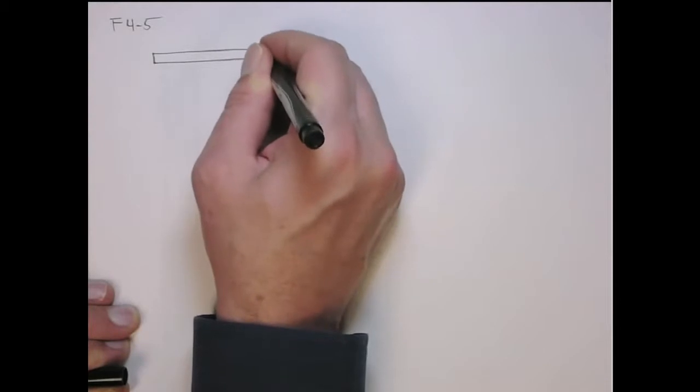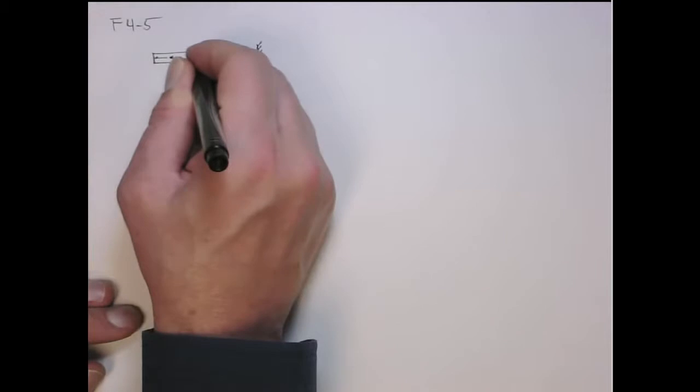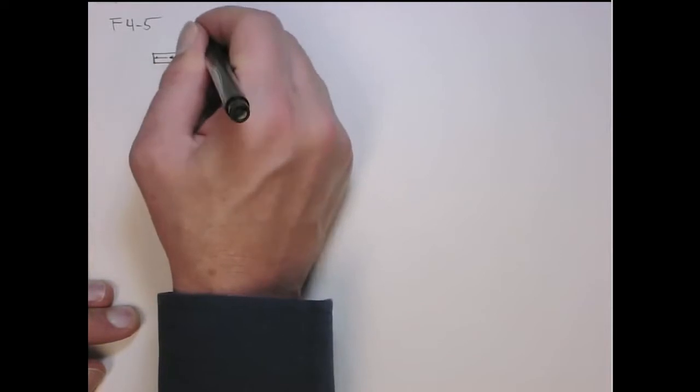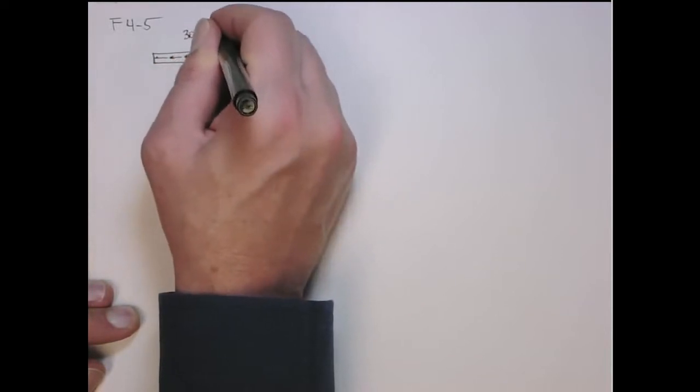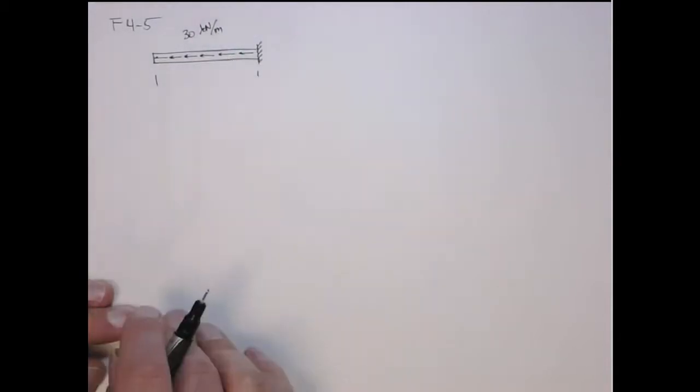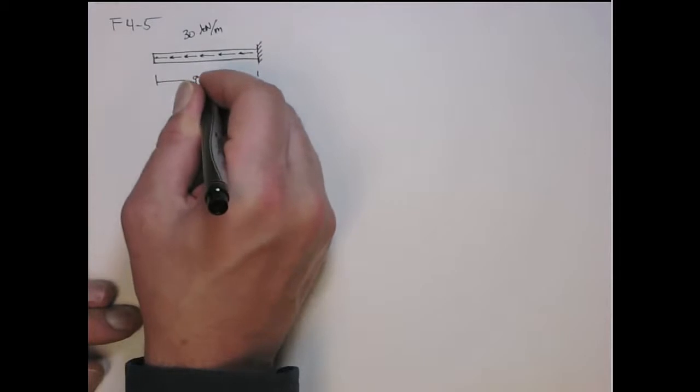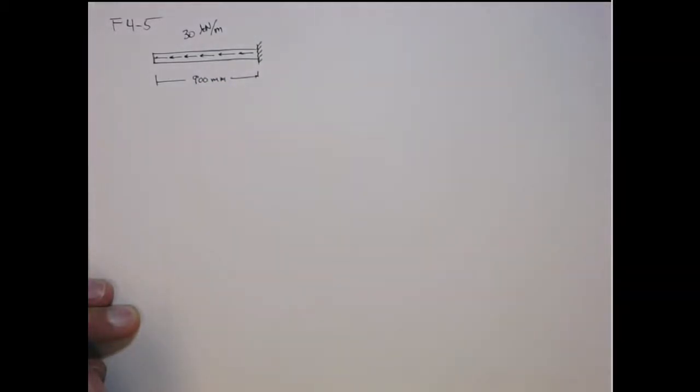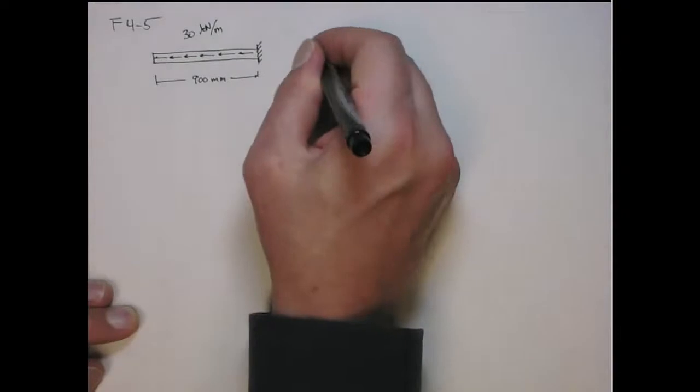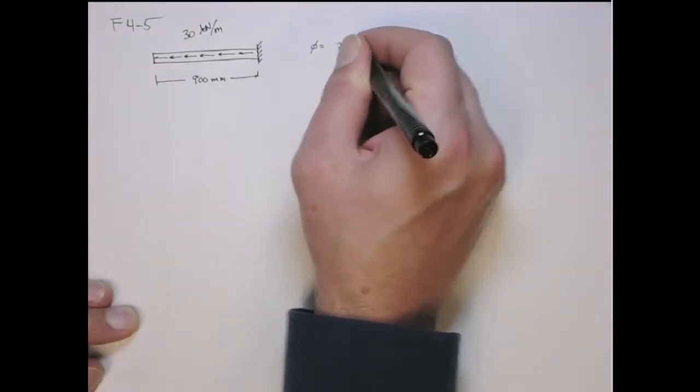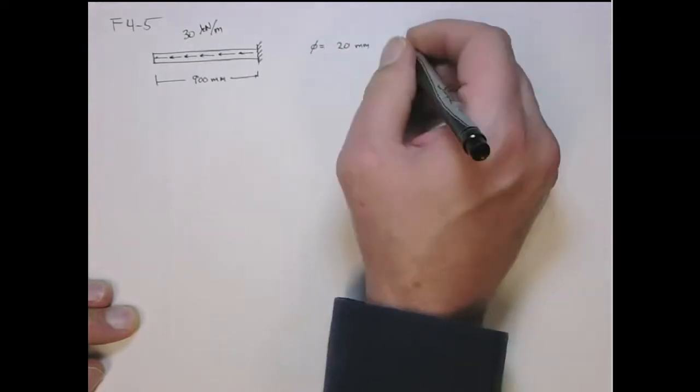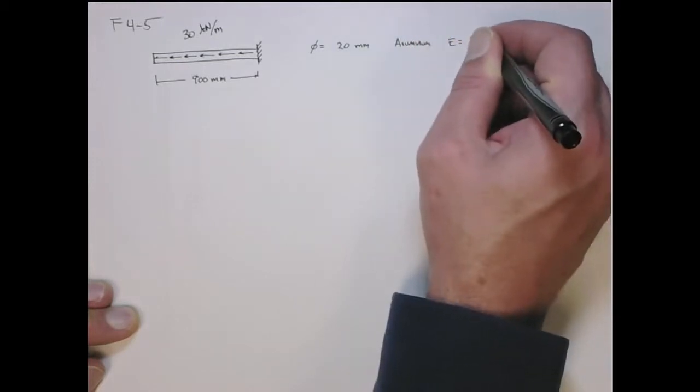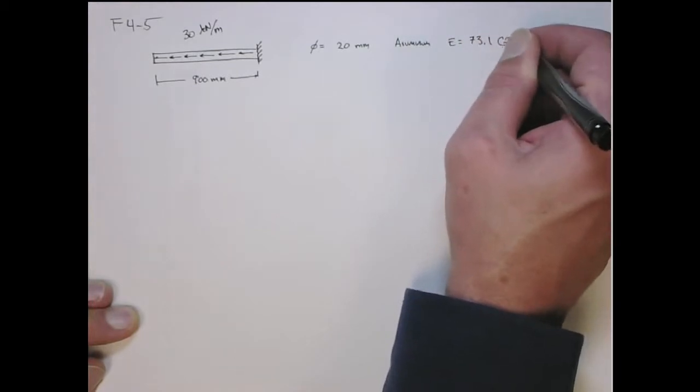It's fixed at this side, but we have this uniform traction of 30 kN per meter. The total length is 900 millimeters, and it's aluminum with diameter 20 millimeters. E is 73.1 gigapascals.